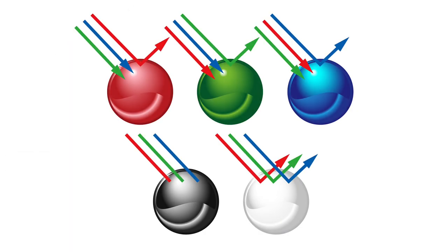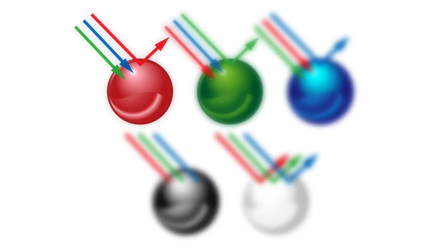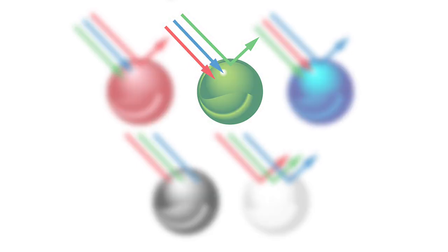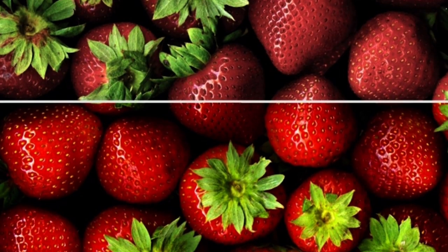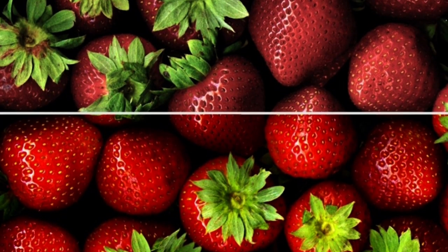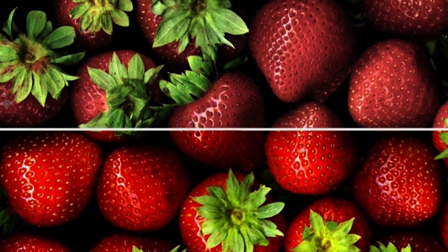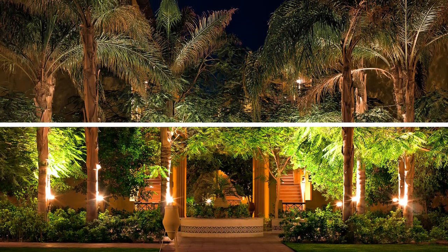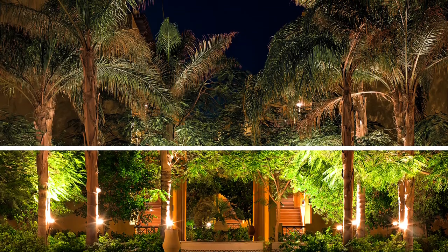In reality, objects don't actually have a color, but rather they absorb and reflect particular colors of light. A strawberry reflects mostly red light, while leaves reflect mostly green light. So if our LED doesn't emit much red light, strawberries appear dull, less saturated, or slightly off color. The same goes for leaves if our LED doesn't emit much green light.